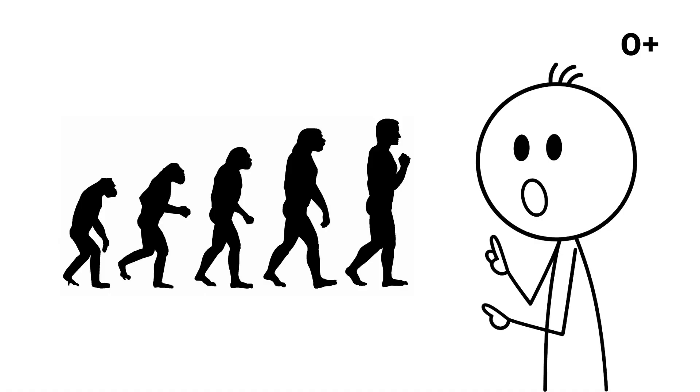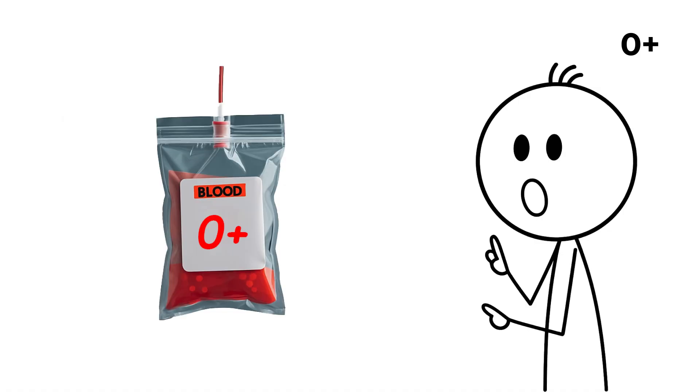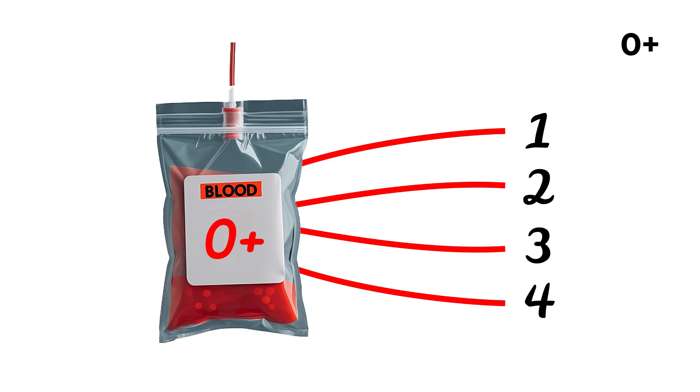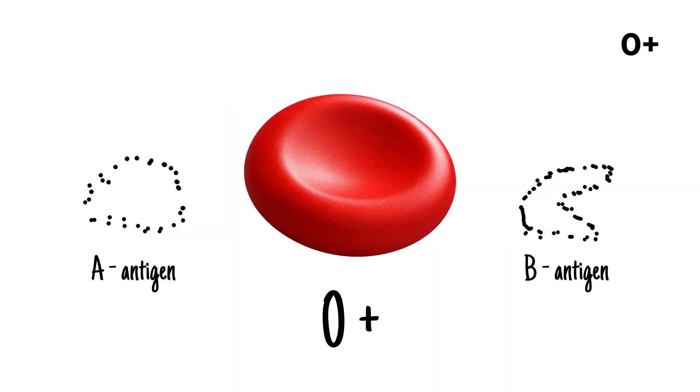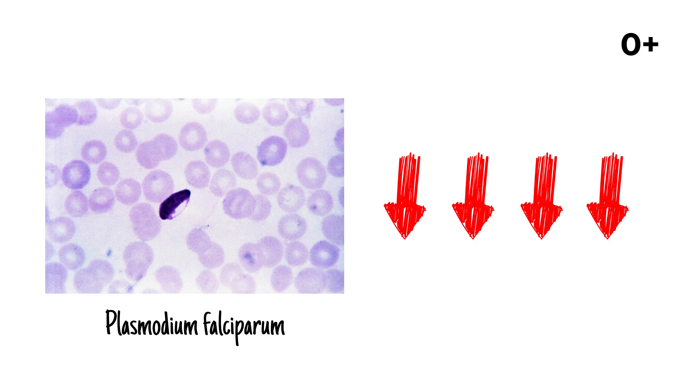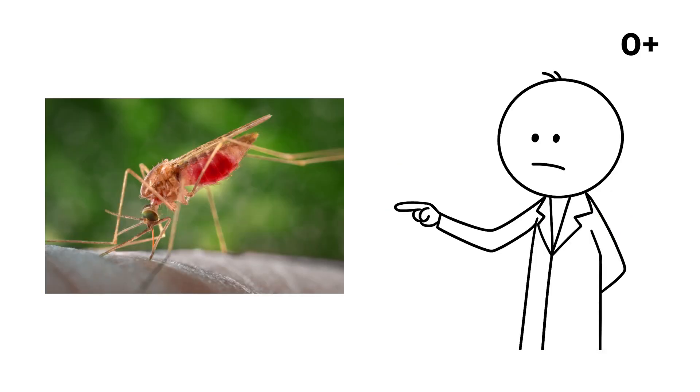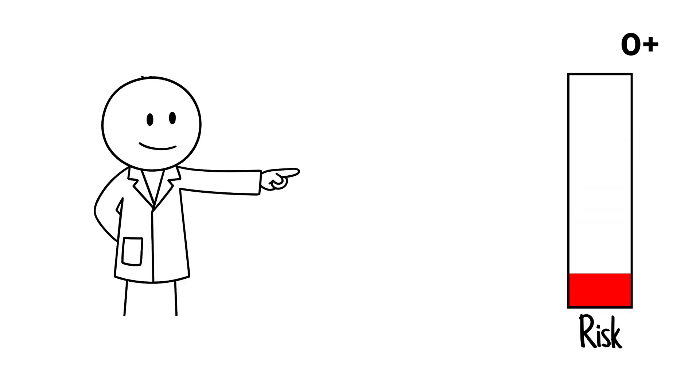From an evolutionary standpoint, type O blood has influenced human survival in multiple ways. For example, lacking both A and B antigens hinders the parasite Plasmodium falciparum responsible for the deadliest form of malaria from clumping red blood cells together, thus lowering the risk of severe malaria in people with type O.